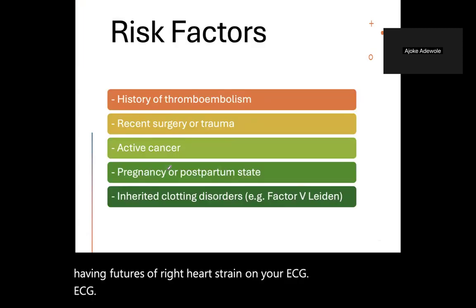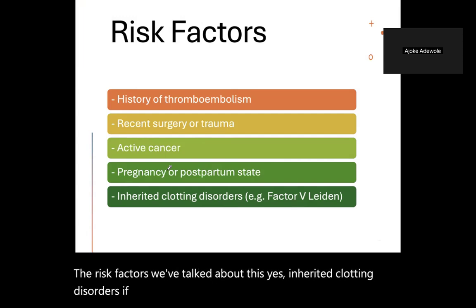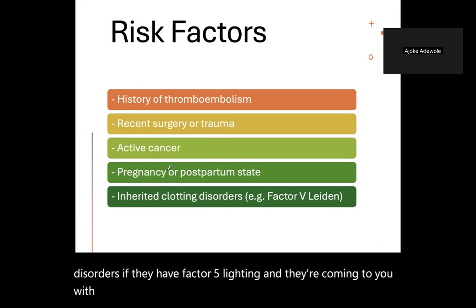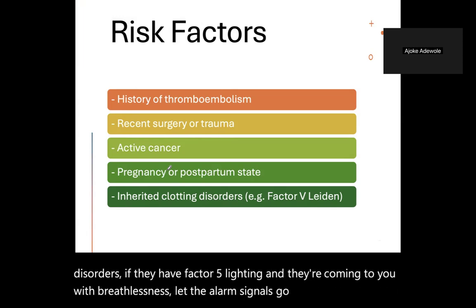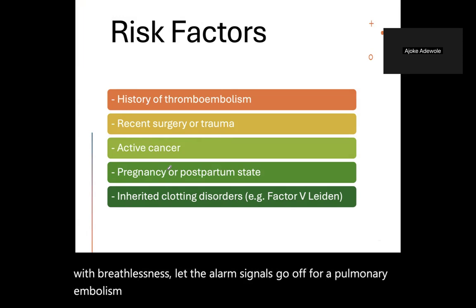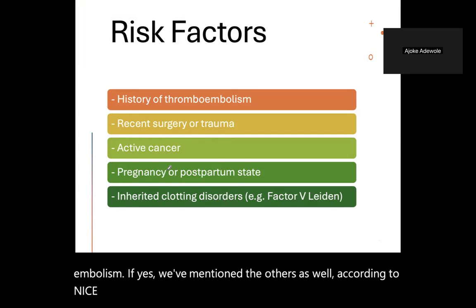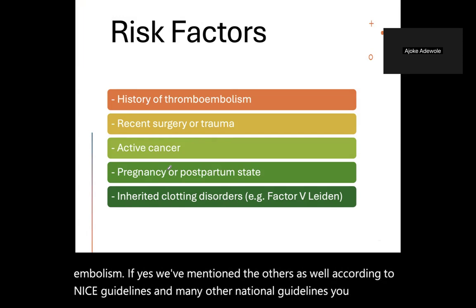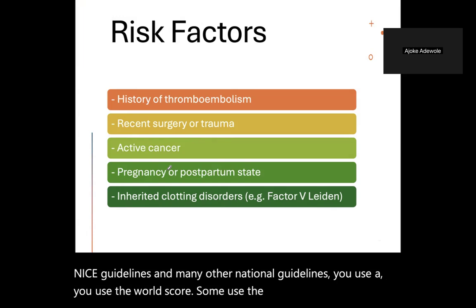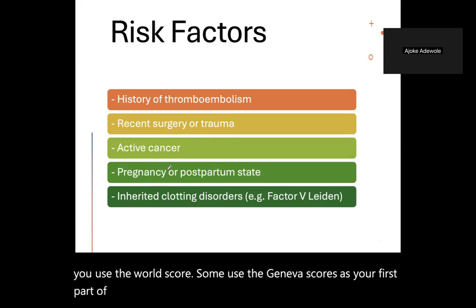Regarding inherited clotting disorders: if they have Factor V Leiden and present with breathlessness, let the alarm signals go off for pulmonary embolism. According to NICE guidelines and many other national guidelines, you use the Wells score — some use the Geneva score — as your first point of call when suspecting a PE.